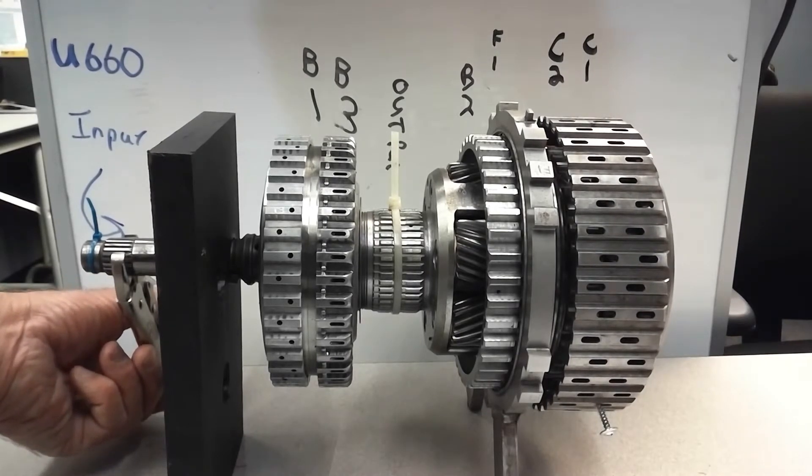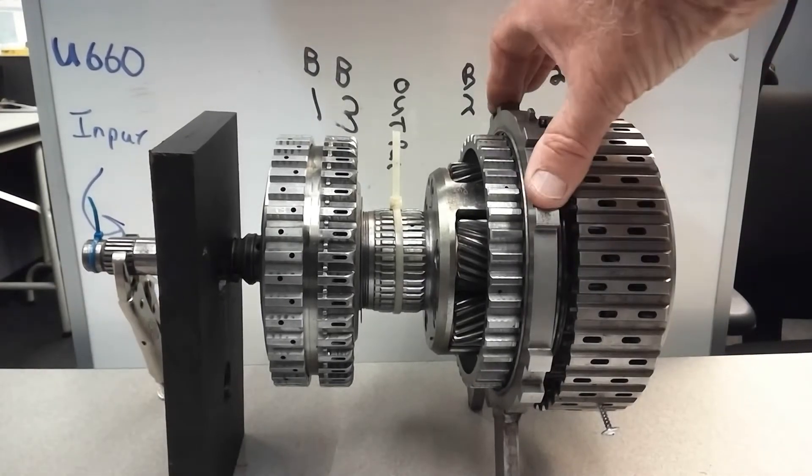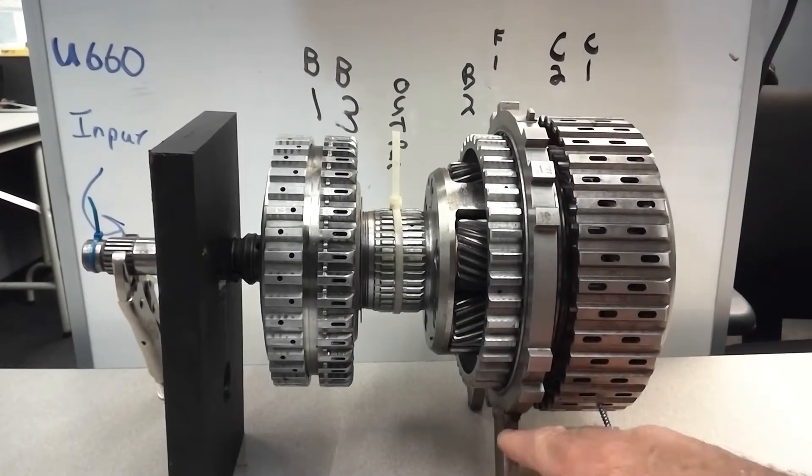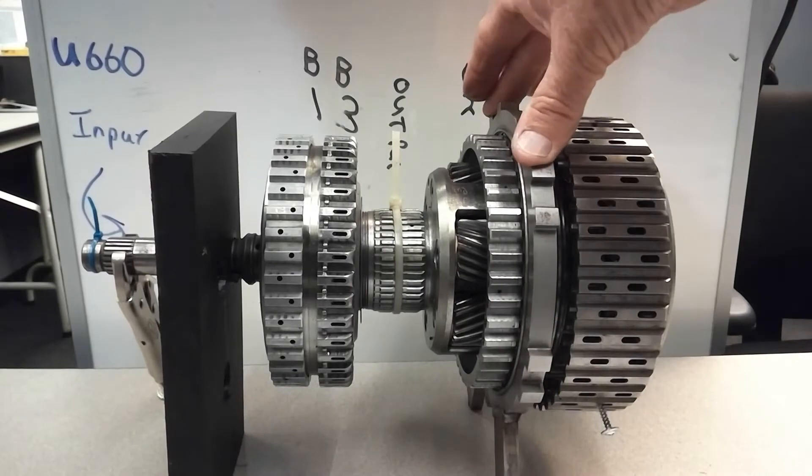C1 and F1. This is the one-way clutch. I have this actually as the mount, so that's splined in the case.